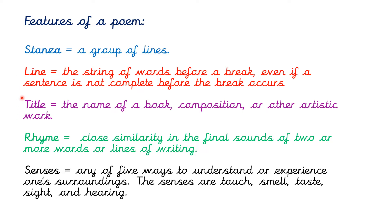The next feature of a poem is a title. A title is the name of a book, composition or other artistic work, and it gives us an idea of what the poem is going to be about. Not all poems will have one, but sometimes we look for this feature in a poem — and that is rhyme. A rhyme is when something has close similarity in the final sounds of two or more words or lines of writing, so it's when two or more words sound the same at the end.